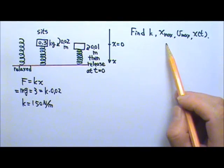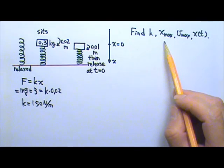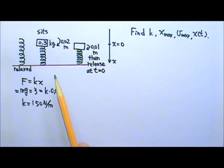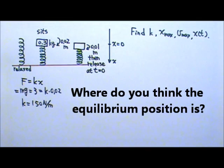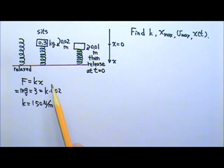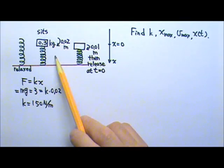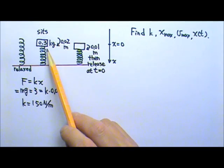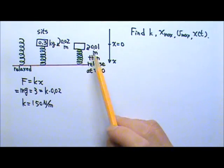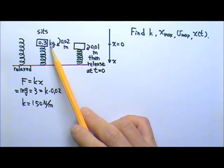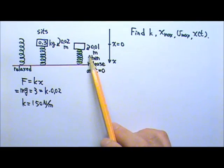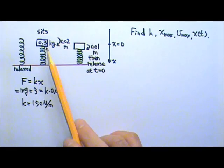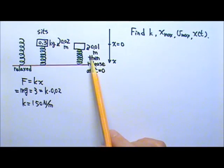Next, let's find the amplitude. The amplitude is the distance between the end point and the equilibrium. The equilibrium position is where the net force on the box is 0 — that is, when it's sitting on top of the spring. The box then gets pushed down by 0.01 meters from that equilibrium position and then let go. So this position is the end point, and the distance between the end point and the equilibrium is that extra 0.01 meters. So 0.01 meters is the amplitude.